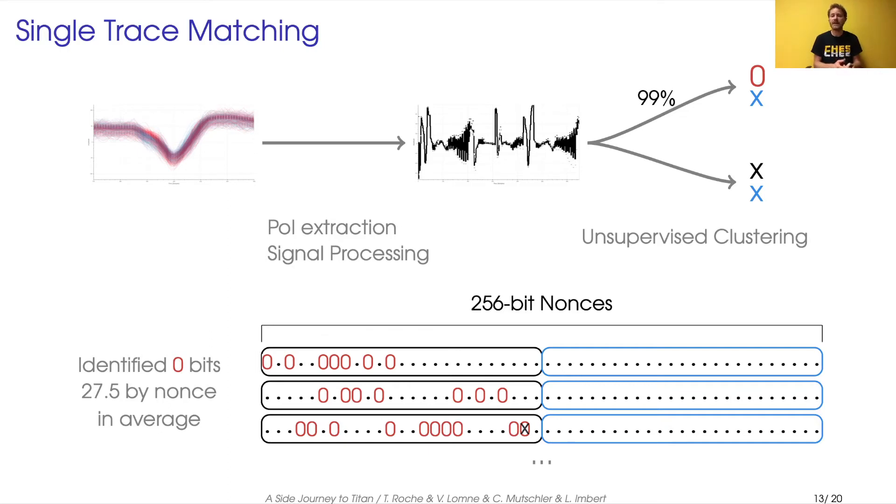We design a clustering algorithm that could classify some of the trace corresponding to a leading bit equal to 0 and put the other in another set. When it does classify one trace as leading bit equal to 0, then it's correct at 99%.